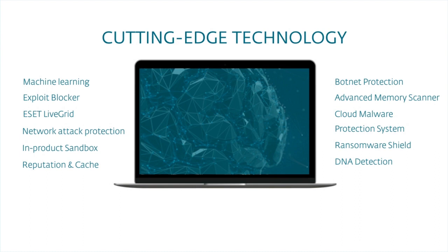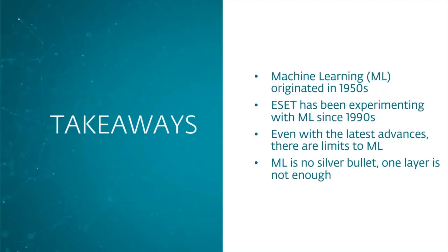Moving to the takeaways: the first thing to remember is that machine learning is nothing new. It's not a technology that originated just five years ago — it comes from the 1950s. What has changed are the possibilities for companies today: there is a lot of hardware and big data services that can help you build machine learning algorithms. ESET has been experimenting with this technology since the 1990s and has had it implemented since 1998 — almost 20 years. But even with the latest advances, we know there are limits to machine learning, such as the importance of updates and the importance of false positives.